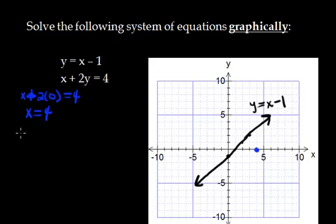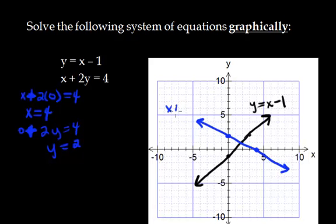Then my y-intercept, I set my x equal to 0. So I've got 0 plus 2y equals 4. Solving for y, I get y equals 2. And that brings me right here. I want to connect these two dots together. Try to get a nice straight line. Remember your arrowheads at the ends. And this is x plus 2y equals 4.